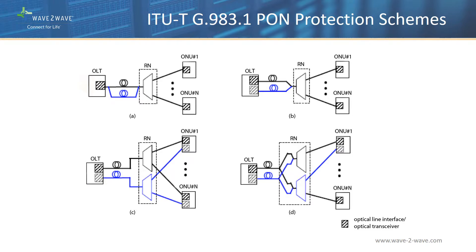As shown on the slide, the G.983.1 standard for PON protection schemes are referred to as types A, B, C, and D. In Type A, only the feeder fiber is redundant. Type B protection duplicates the line card of the OLT so that the ODN and optical interfaces at the OLT are protected. Type C represents one-for-one dedicated path protection with full duplication of all PON equipment and facilities. Type D protection specifies independent duplication of the feeder and the distribution fibers and allows telcos to offer differentiated reliability levels for users. The ITU-T standard Types C and D with full protection offer high reliability, but costs are way too high to be practical except in specialized applications.